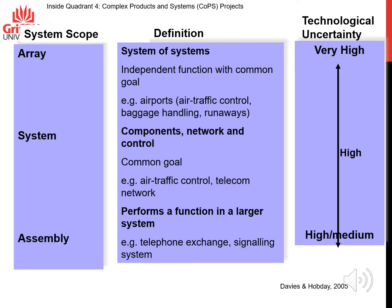Usually, the level of complexity of the project is also associated with the technological uncertainty of the project. Array projects have a very high level of technological uncertainty, while system projects have a high level, and assembly projects can range from high to medium.